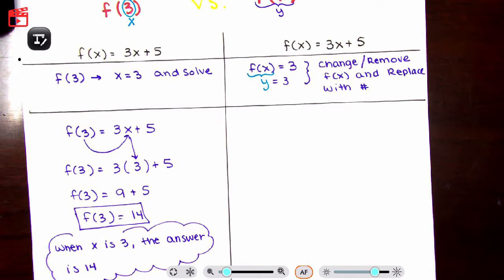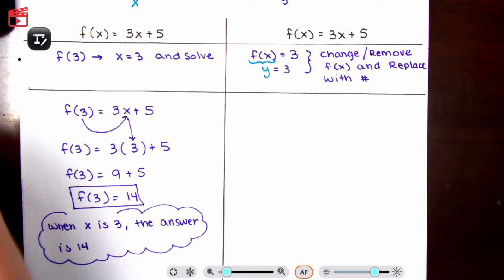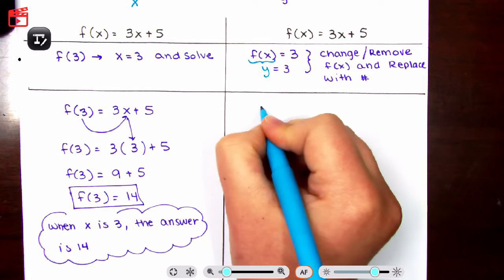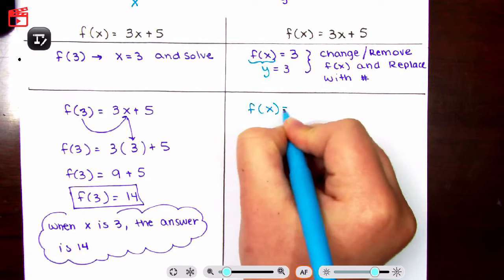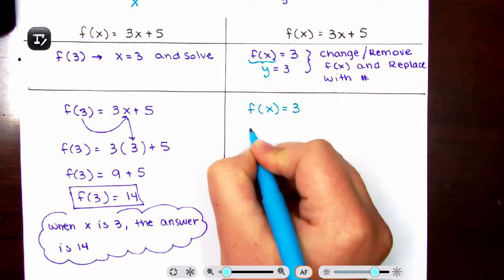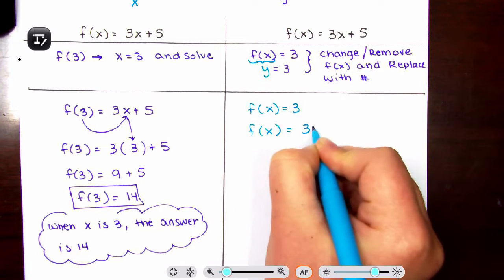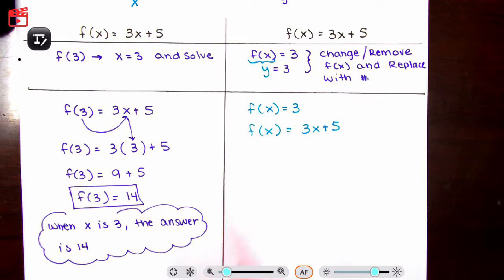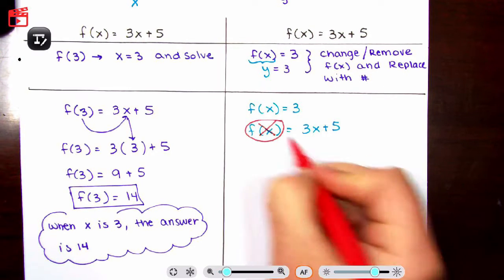So this is when x is 3, the answer is 14. Now this one is a little bit different. So we have f of x equals 3. We have f of x equals 3x plus 5. What you're going to do is you're going to take f of x and you're going to get rid of it.